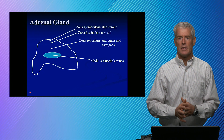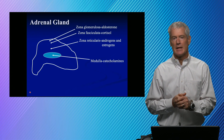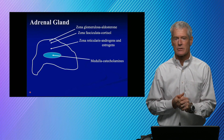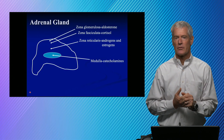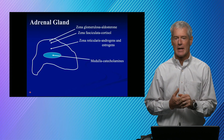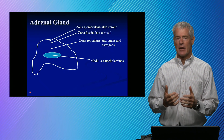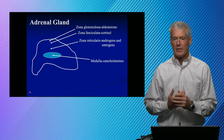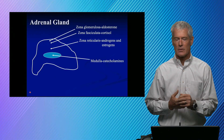Cortisol and its related hormone aldosterone — aldosterone is synthesized on the outer parts of the adrenal gland. The middle part synthesizes cortisol and then the androgens and estrogens. And then finally, in the medulla, you have catecholamine synthesis.